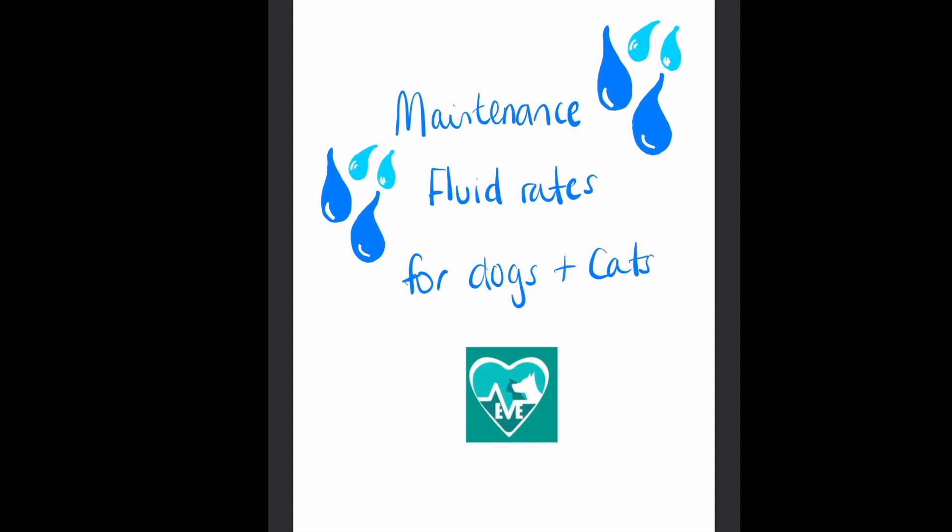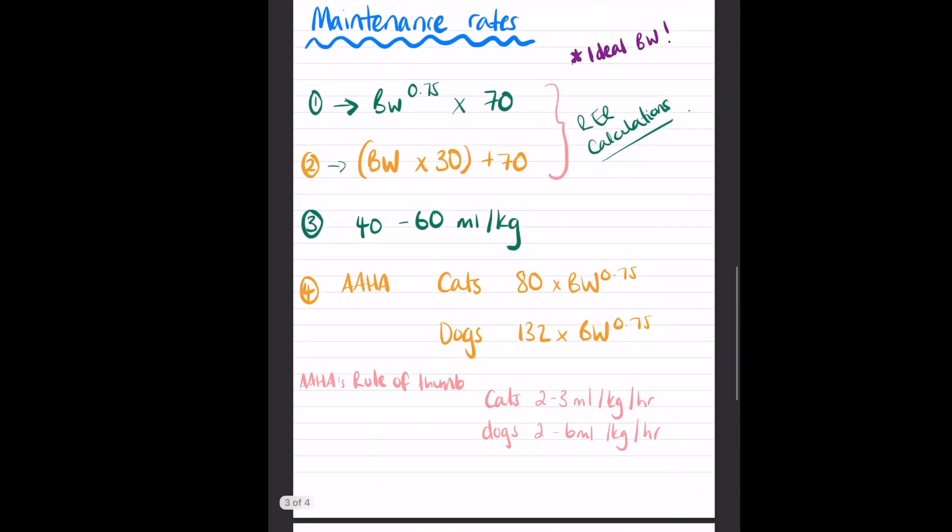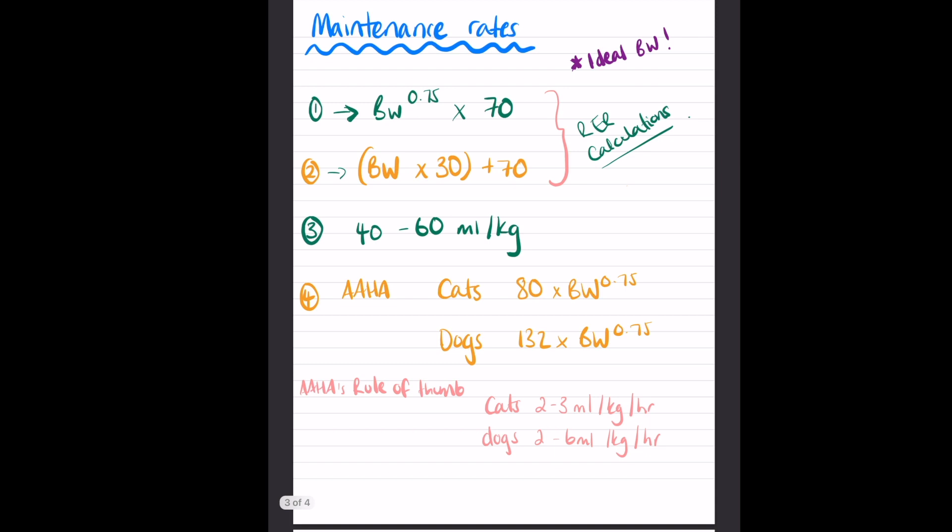So first of all, let's dive straight in and look at maintenance rates. These are just some of the ways you can work out maintenance rates. When we say maintenance rates, we basically mean the daily amount of fluid a body needs. Our patients need that fluid just like we need eight cups of water a day - the struggle is real there. But same thing. It's nothing to do with dehydration or any fluid that's been lost. It is just what the body needs every day, and we call that maintenance.